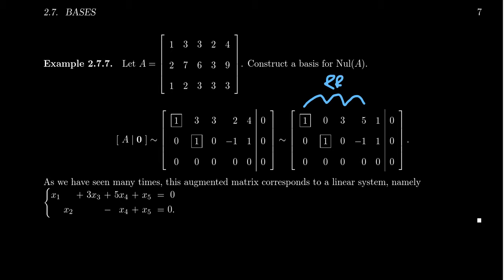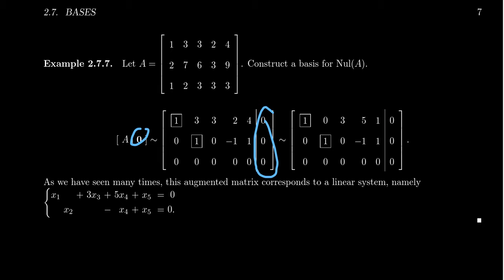Now, we are solving a homogeneous system, so be aware that I did augment with the column of zeros. The fact that you have a column of zeros means that when you do row operations, nothing will ever change. When we found the basis for the column space, I didn't include this column of zeros, and that was okay. I'm including it this time to emphasize that this augmented matrix represents a system of equations.